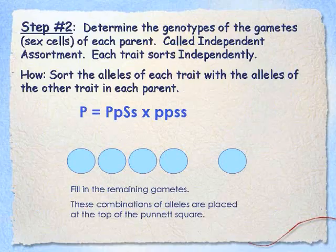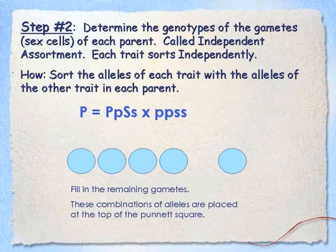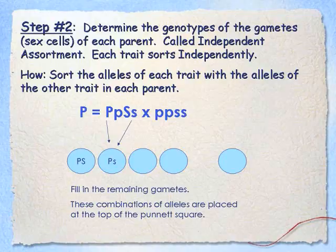Now that we know the genotypes of the parents, we have to determine the genotypes of the gametes — the sex cells of each parent. Remember, the alleles will sort independently. That means when you have a big P, it has an equal chance of being paired up with a big S or an equal chance of being paired up with a little s. I'll show you how we form these gametes. That's what independent assortment means.